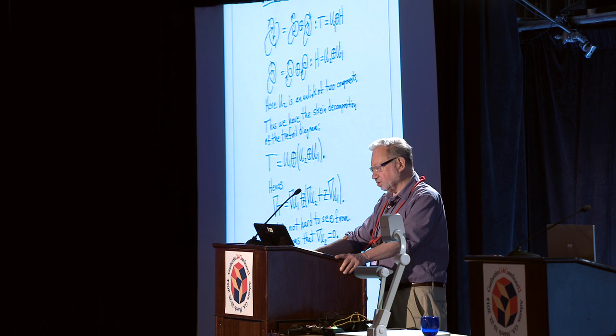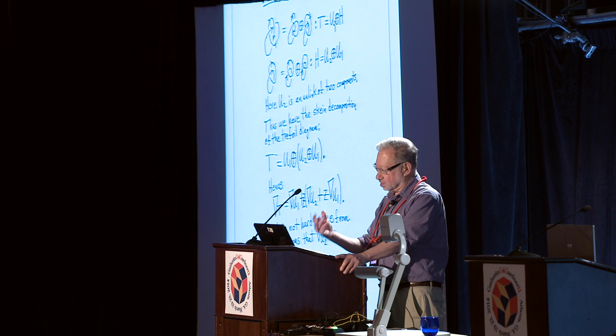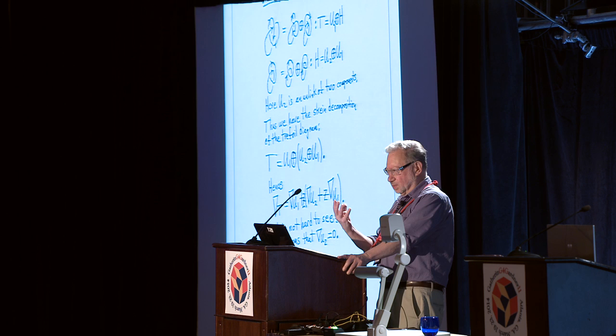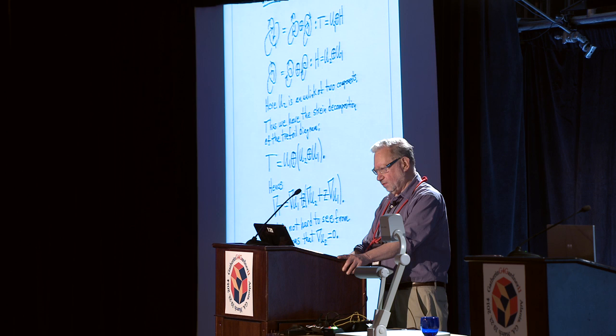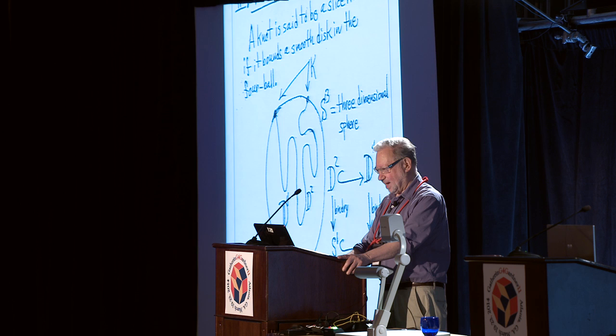This was the original scheme. Some years later it turned out there were other polynomials you could associate, but the skein which lies back of it — this way of thinking of the knot as a composition of unknots and unlinks — is fundamental to all of these things, and very mysterious. I'm going to show you some problems I'm interested in about that.